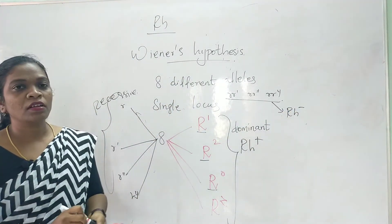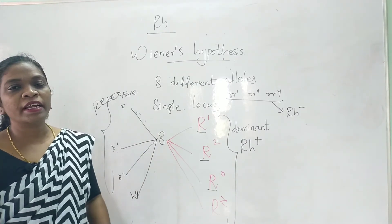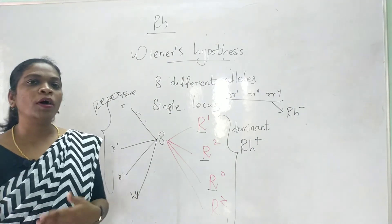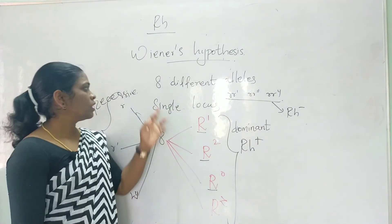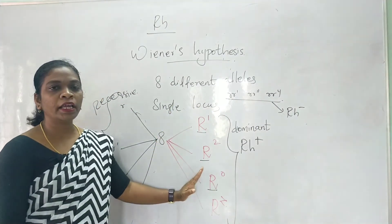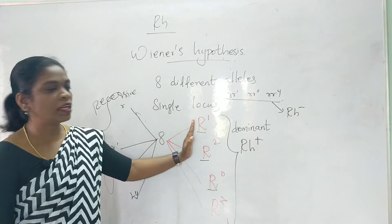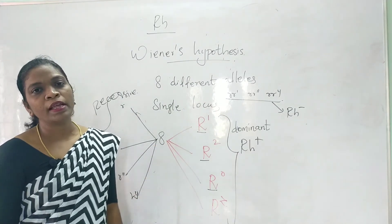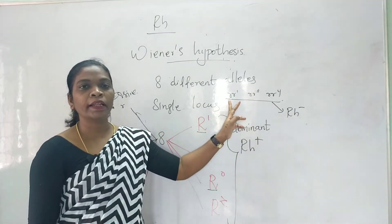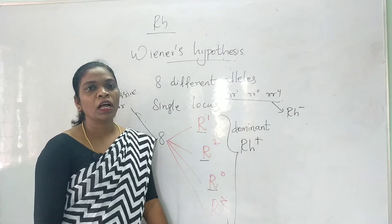This is what Wiener explained. When we compare Fischer and Reiss hypothesis with Wiener's hypothesis: according to Fischer and Reiss there are three different pairs of alleles at three loci resulting in Rh positive or negative blood groups. According to Wiener there are eight different alleles present at a single locus exhibiting dominant and recessive forms. If the individual has dominant capital R, their blood group is Rh positive; if they have double recessive small r, their blood group is Rh negative.